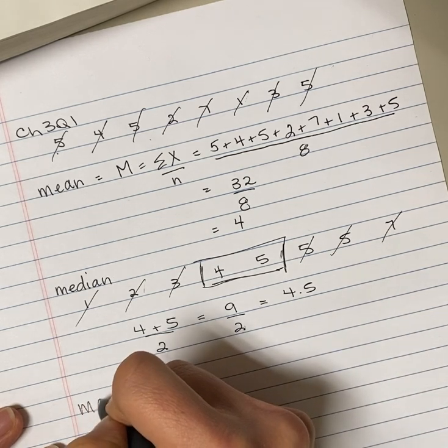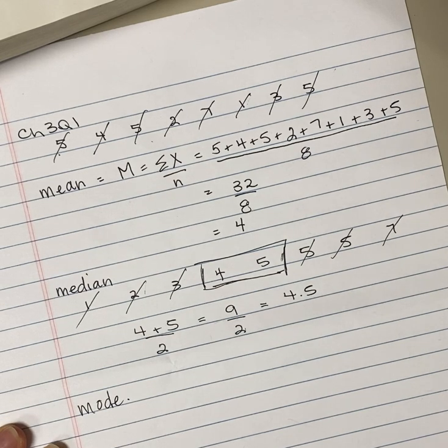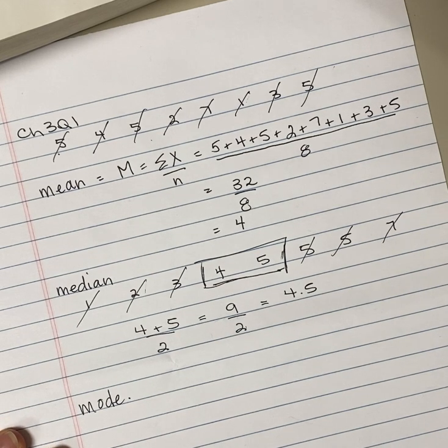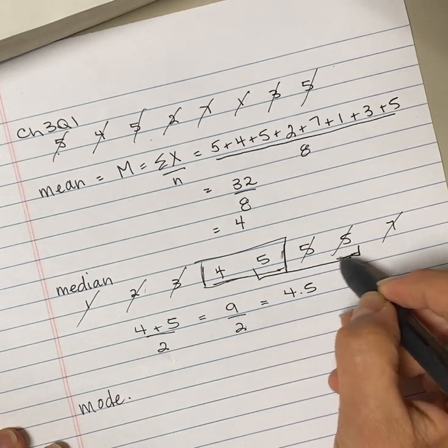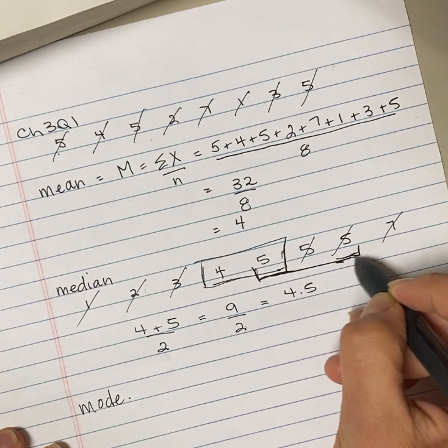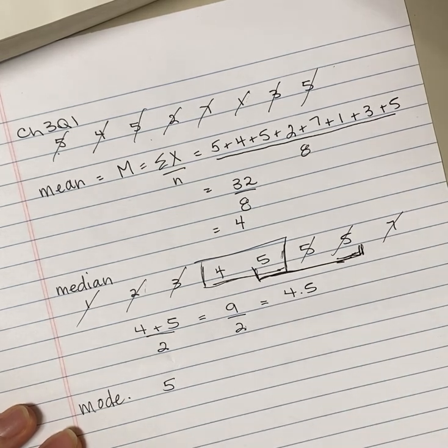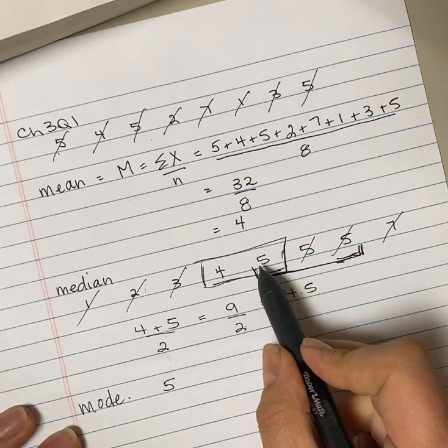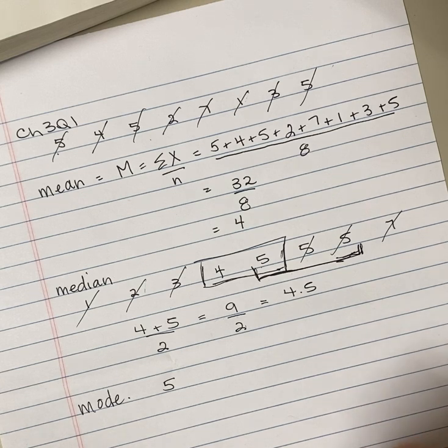The mode is the most frequent score. And once we've rearranged the values for the median, the mode sort of falls out because the scores are clustered together. So the mode here is 5 because the number 5, the score of 5, occurs three times. So 5 is the most frequent score.